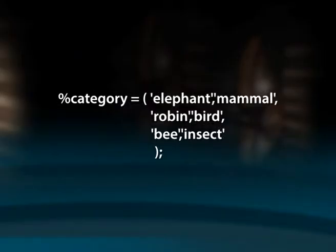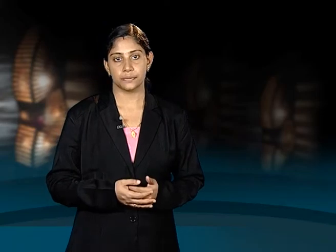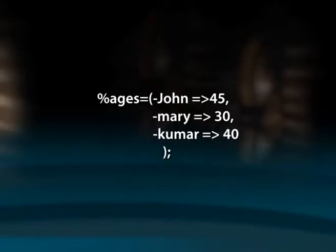%category = (elephant, 'mammal', robin, 'bird', bee, 'insect'). This statement initializes the key elephant with the value mammal, robin with bird, and so on. This can also be accomplished using the fat comma (=>) syntax, which is more clearly understood: %category = (elephant => 'mammal', robin => 'bird', asp => 'reptile'). Another variant uses keys preceded by a hyphen with no quotation marks required, for example: %ages = (-John => 45, -Mary => 30, -Kumar => 40).